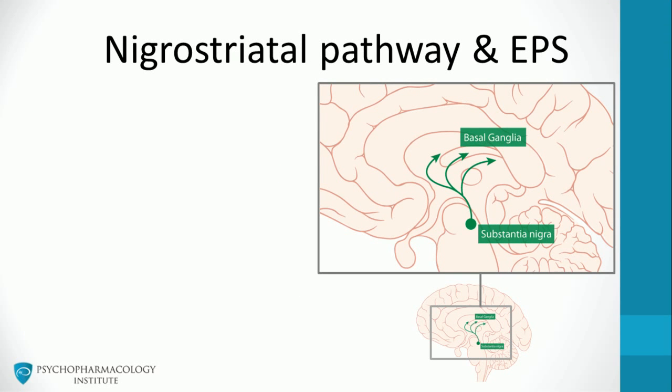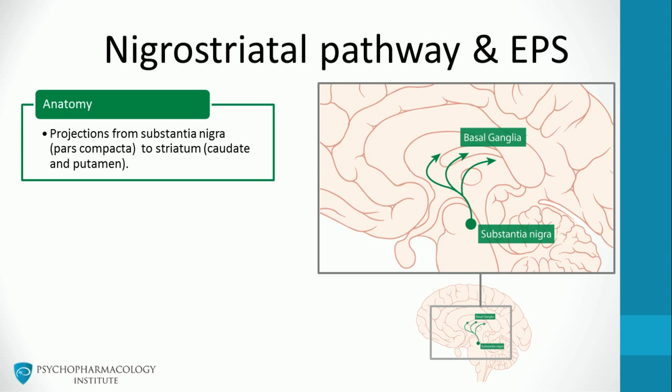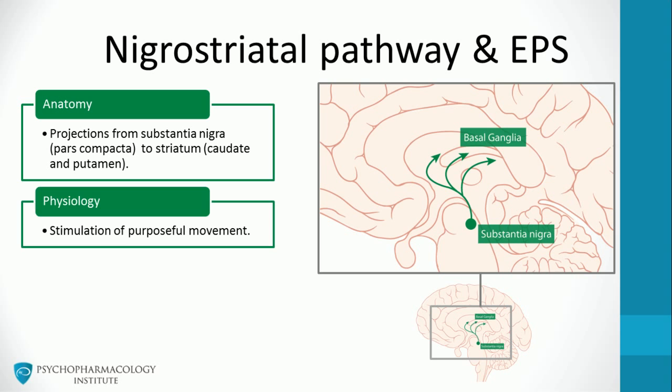The nigrostriatal dopamine pathway is linked to neurological side effects caused by D2 antagonists. The nigrostriatal system contains about 80% of the brain's dopamine. This tract projects from cell bodies in the pars compacta of the substantia nigra to terminals that innervate the striatum, caudate, and putamen. This pathway is involved in motor planning, and dopaminergic neurons stimulate purposeful movement.